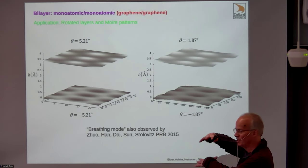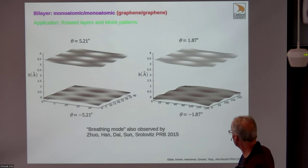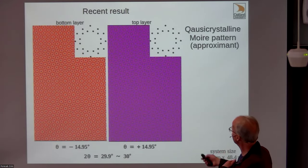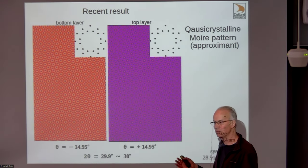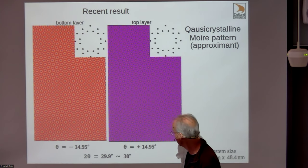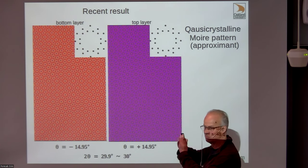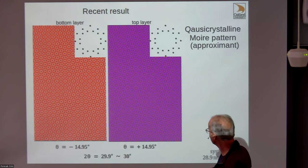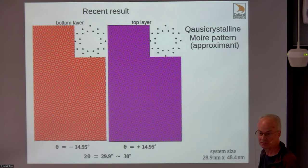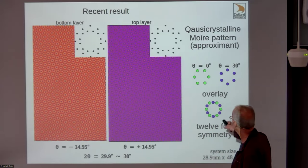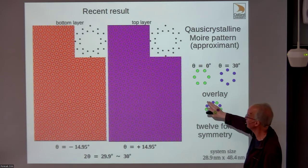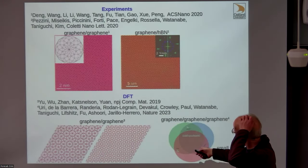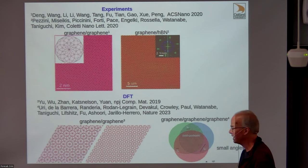You can also look at two sheets twisted on top of each other, producing what one group called breathing modes. At close to 30 degrees rotation, a colleague, Christian Akeem in Helsinki, wrote CUDA code about 20 times faster than my MPI code. He gave an initial condition with layers rotated close to 30 degrees and got a quasicrystal—which makes sense because a 30-degree rotation of a hexagonal lattice on top of itself gives 12-fold symmetry. This has also been seen experimentally.